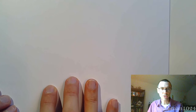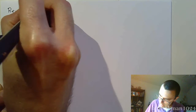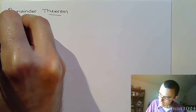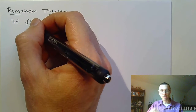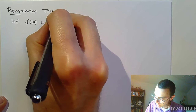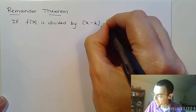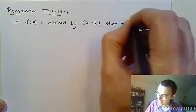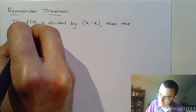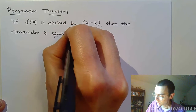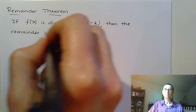The remainder theorem uses synthetic division and does something really neat. Here is what it says: if f of x is a polynomial function, and if that is divided by x minus k, then the remainder from doing that synthetic division is equal to f of k. The remainder is going to be the function evaluation.